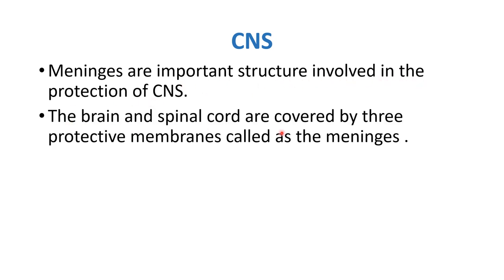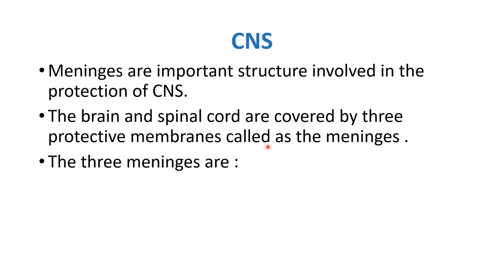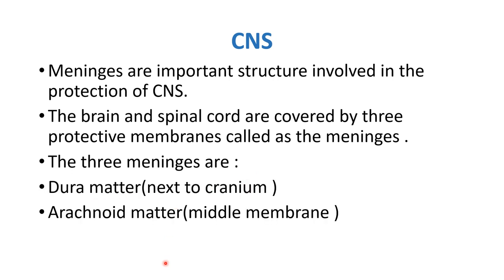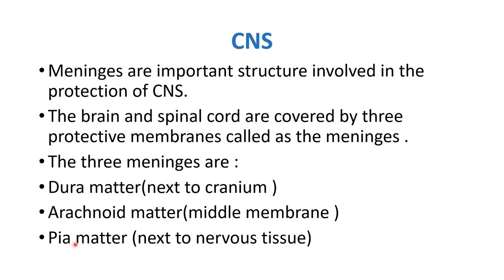The brain and spinal cord are covered by three protective membranes called the meninges. The three meninges are: first, the dura mater; next, the arachnoid mater; and then the pia mater. The dura mater is next to the cranium, the arachnoid mater is the middle membrane, and the pia mater is next to the nervous tissue.